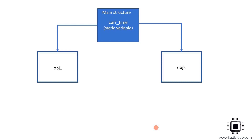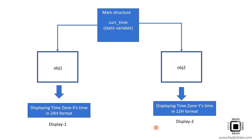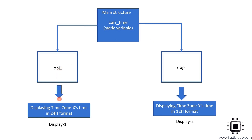Let's consider a scenario where you have created two objects — object one and object two — of this main structure. Object one drives display one and it displays time zone X time in 24-hour format. Object two drives another display and it displays time zone Y time in 12H format. No matter how many objects you create, the time is the same and should be generic to these objects. That means we will make this current_time attribute a static variable.